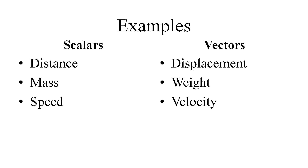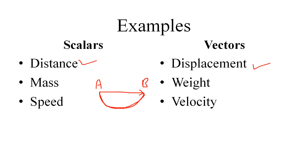I will discuss more about the difference between distance and displacement in coming lectures. Suppose you are traveling from point A to point B — the straight line will tell us about the displacement. Displacement has a direction. Another method: you can move from A to B via a longer path — that total path followed to travel from A to B is distance, so distance is a scalar and displacement is a vector.